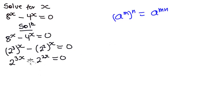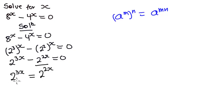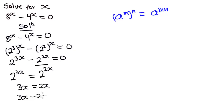From here we move the second term to the right-hand side, so we have 2 to the power 3x is equal to 2 to the power 2x. Since we have the same base on both sides, we equate the exponents: 3x is equal to 2x. Moving 2x to the left gives x is equal to 0.